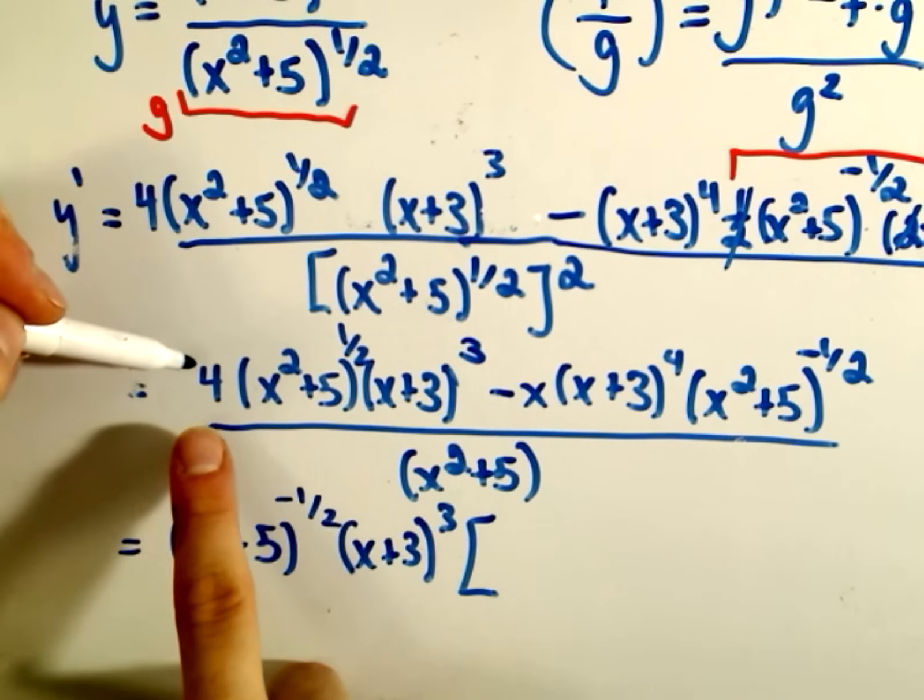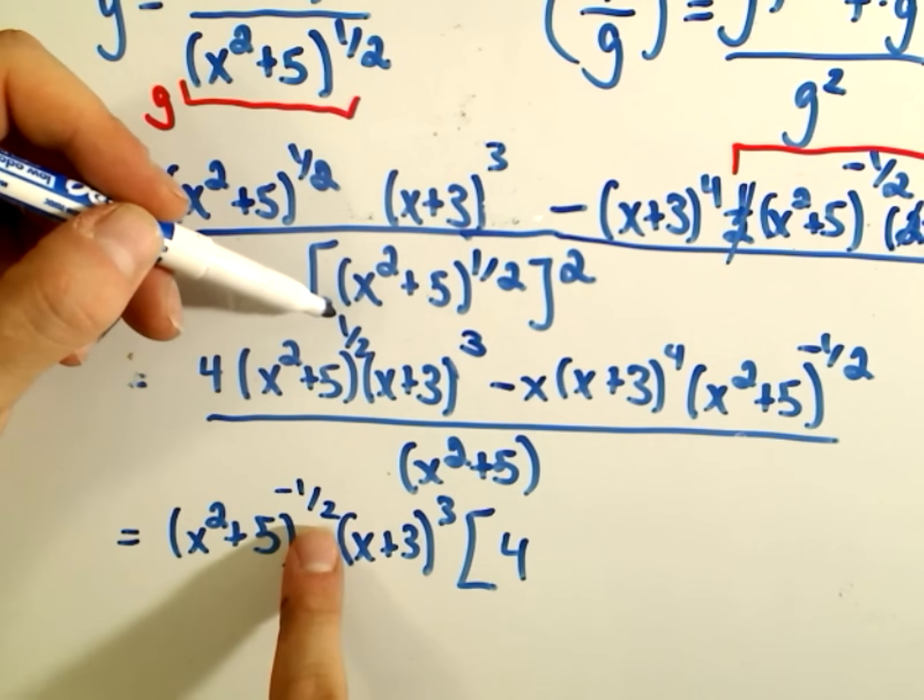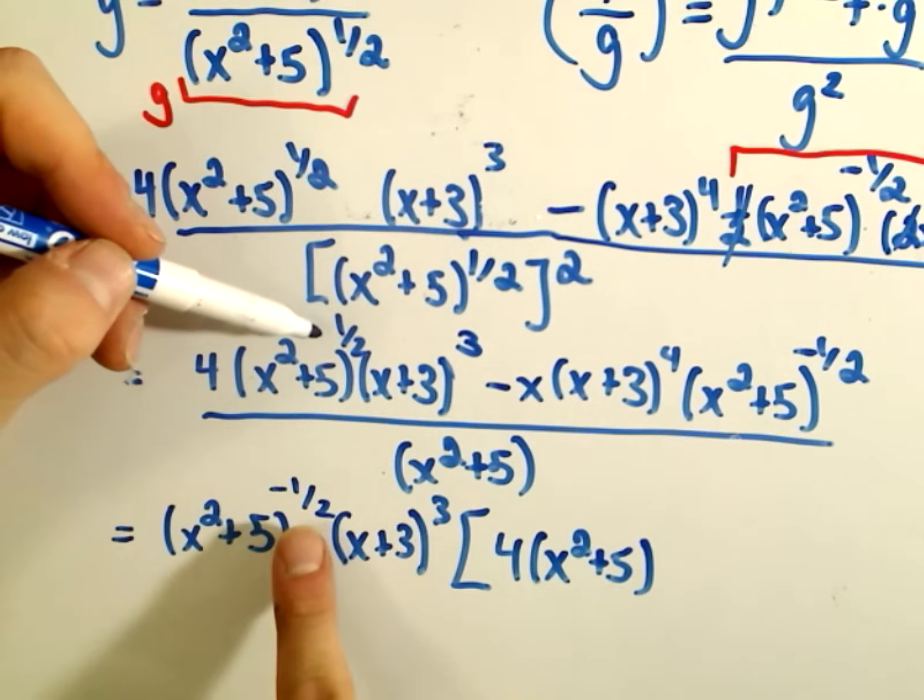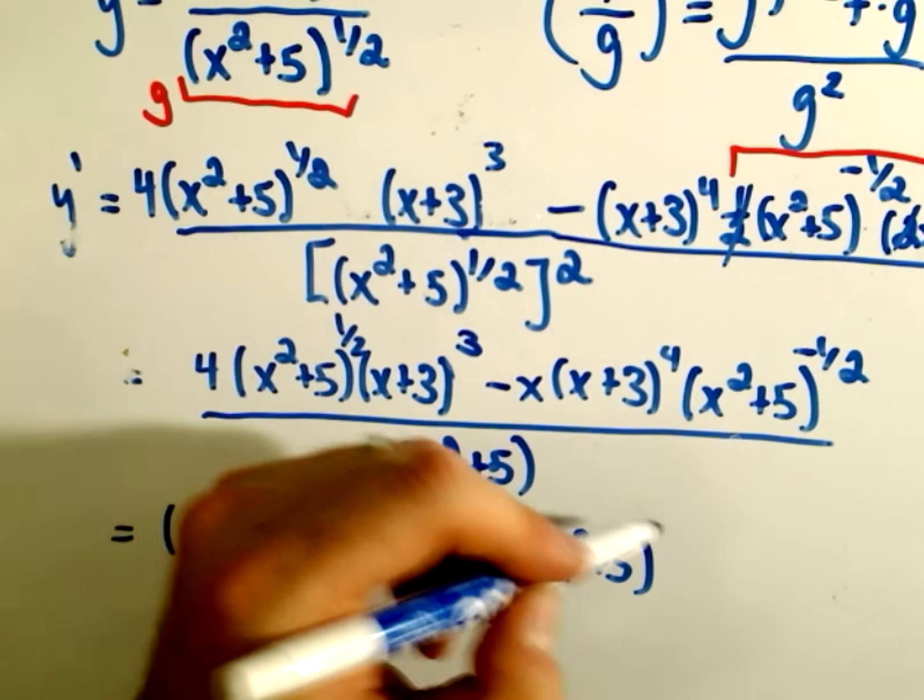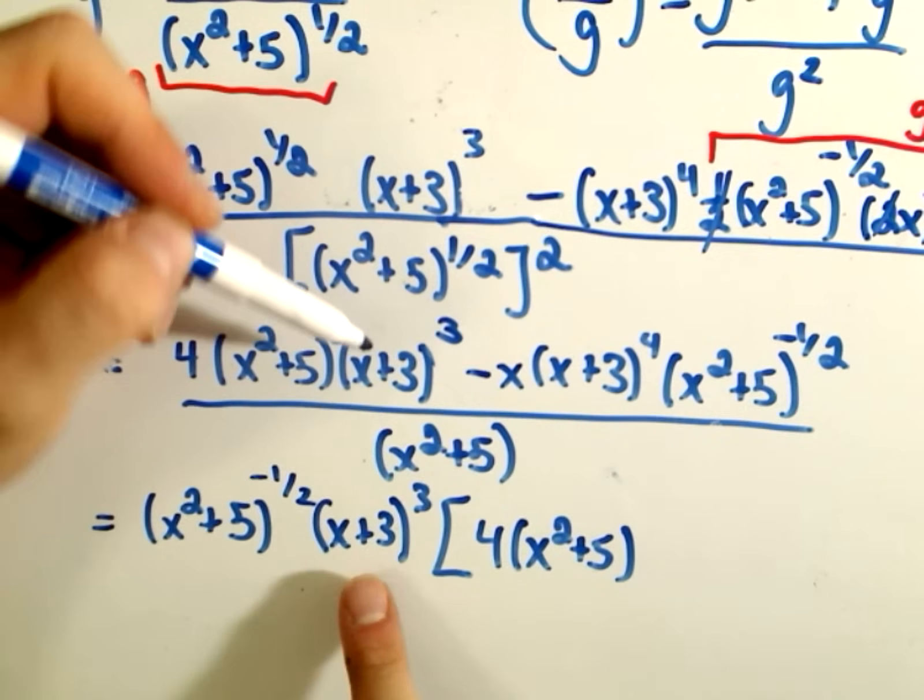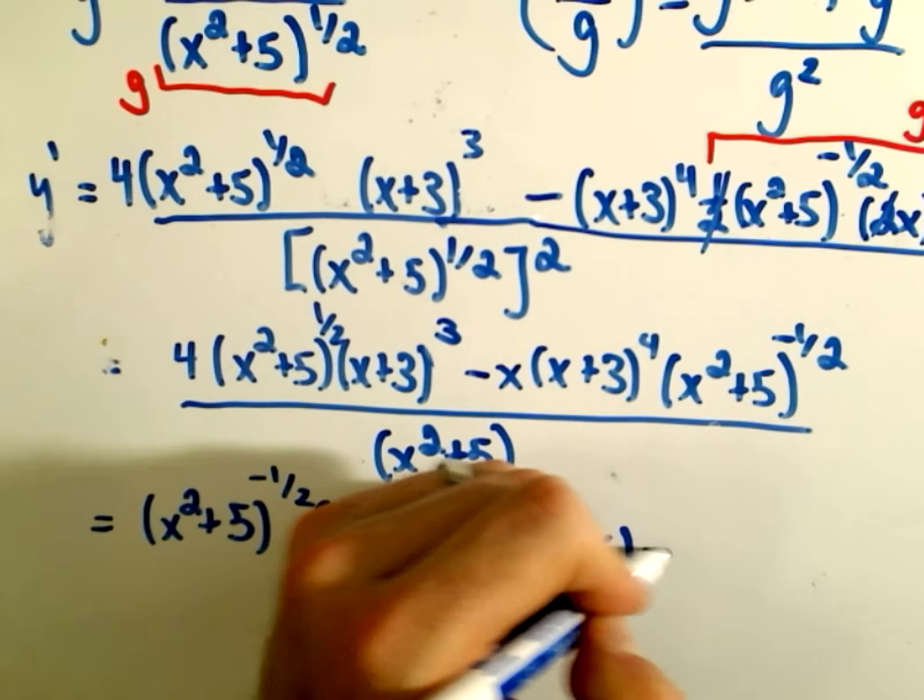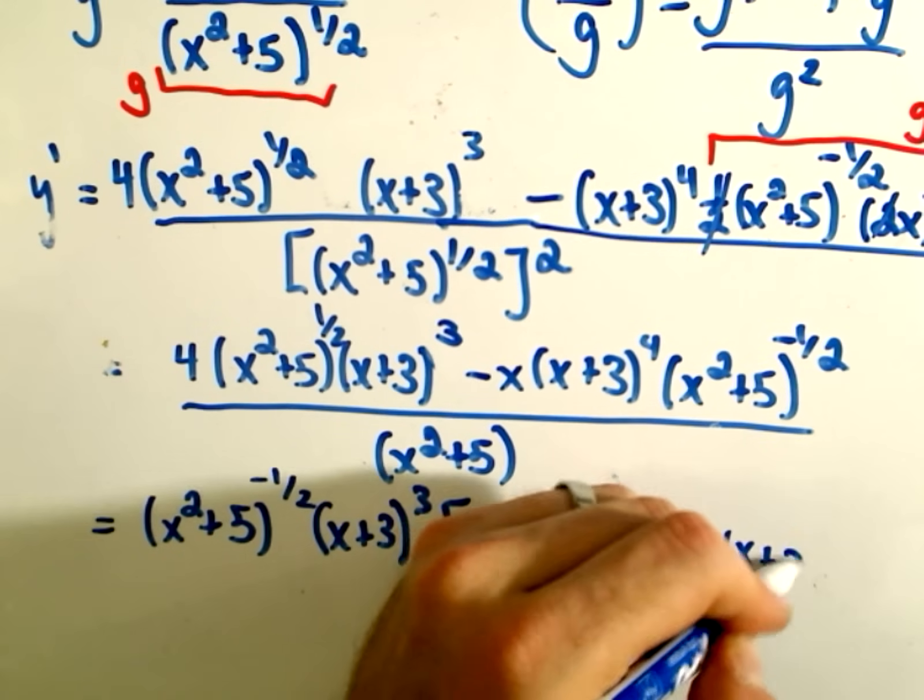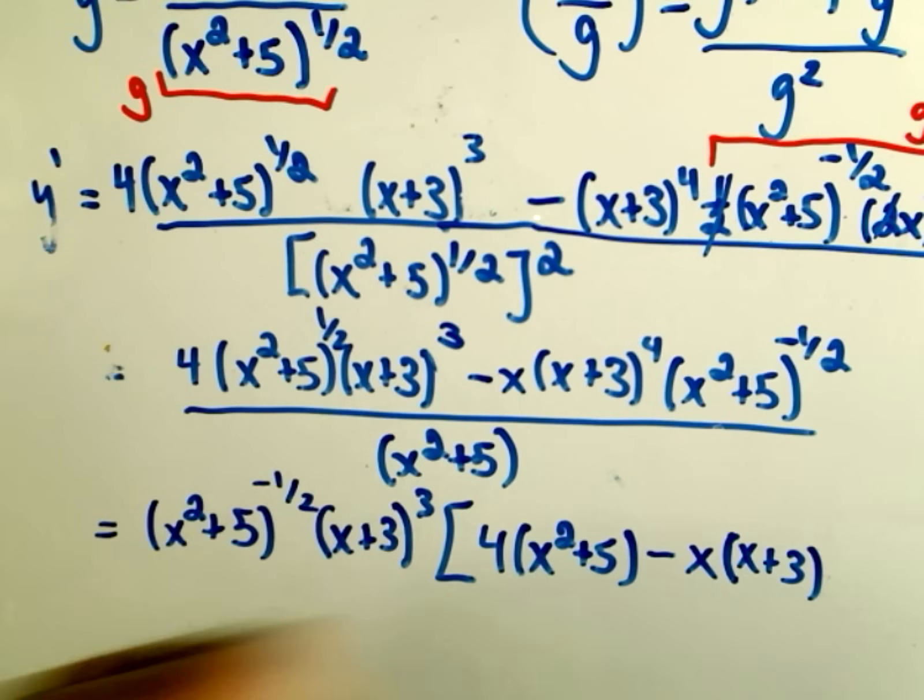And then for the x plus 3 term, well, we can factor out the smaller power, which would be x plus 3 cubed. And then the inside, okay, we left the 4 alone, so it's going to go back inside. Now, notice our powers don't agree on the x squared plus 5. So that means I'm going to have to multiply it by some power of x squared plus 5. Well, what would that power be? We need the exponents to add up to positive 1 half. Well, negative 1 half plus 1 is positive 1 half, so we just need 4x squared plus 5. And then we pulled out the correct power on the x plus 3. Go through the same argument for the other term. We didn't do anything with the minus x. It's still in there. We didn't pull out the correct power on the x plus 3. I think we're going to need an x plus 3 to the first power. But then we did pull out the correct power on the x squared plus 5 to the negative 1 half.